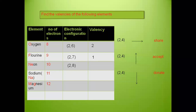For neon, the electronic configuration is 2,8, so the valency is 0 because it is already stable - it has completed both its duplet and octet. For sodium, the electrons are distributed as 2,8,1 because the second shell has a maximum capacity of 8, forcing one electron into the third shell.